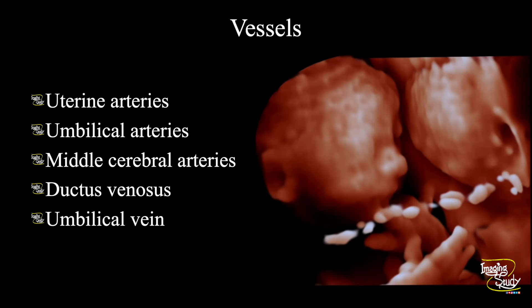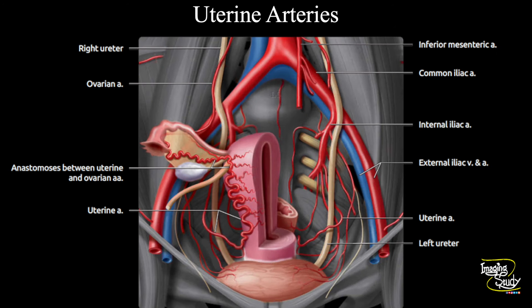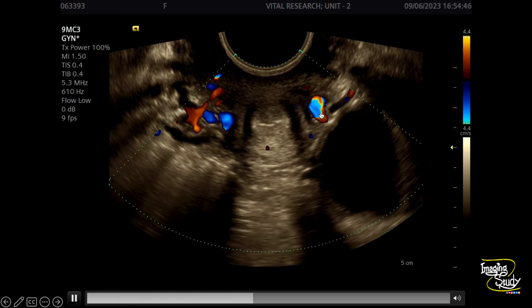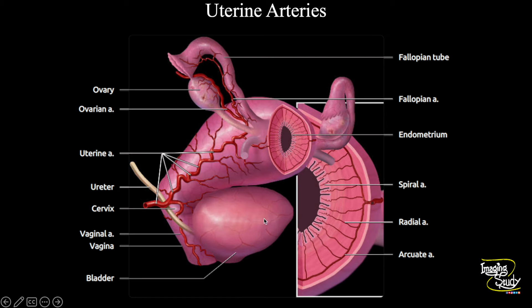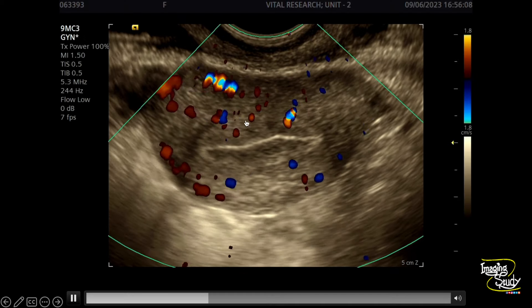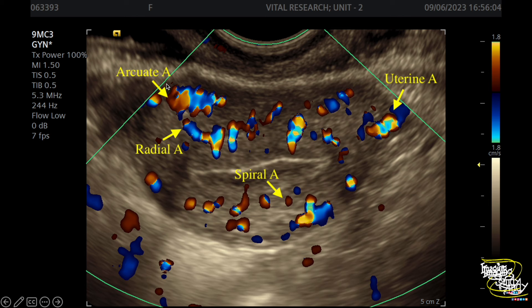Now come to the main topic. I'll go with these five vessels. The uterine artery is a branch of the internal iliac artery that comes to the lateral part of the uterus. This is the area of the cervix where we can easily detect the uterine artery in the non-pregnant state. On transvaginal ultrasound, in transverse section, you can see the lateral vessels are prominent along the uterine wall — these are the uterine arteries. They give branches to the muscular part and to the endometrium.